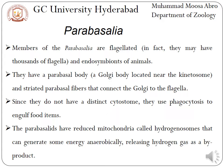The second group of supergroup Excavata is Parabasalia. Members of Parabasalia possess flagella — up to thousands of flagella — and they are endosymbiotic animals, living in association with other organisms. They have a parabasal body and Golgi body located near the kinetostome. The parabasal fiber connects the Golgi body to the flagella, and its main function is to connect the body with the flagella.